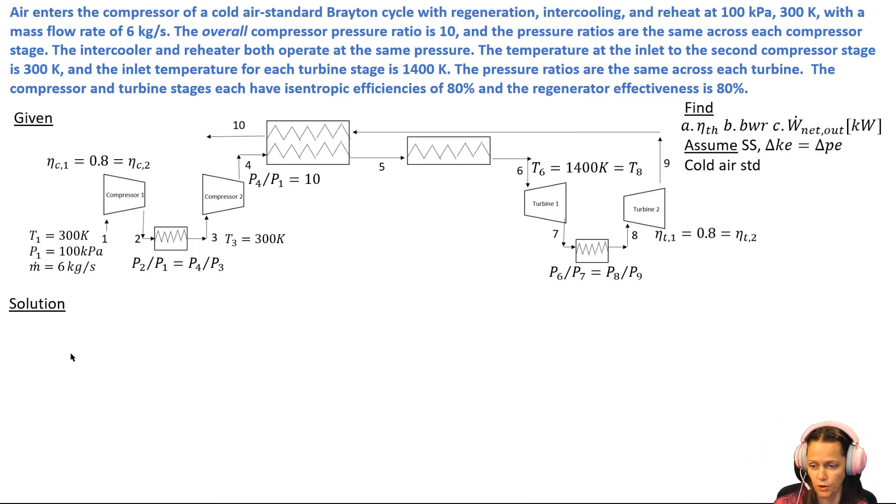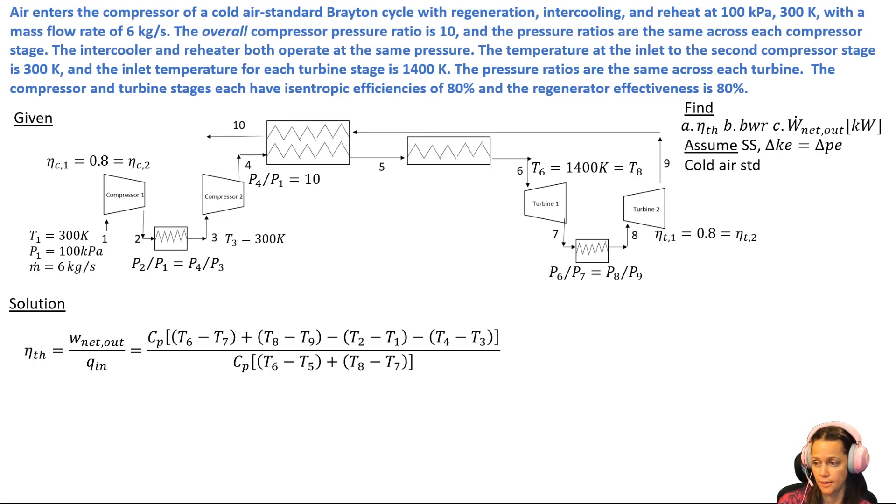I'm going to get some governing equations for that. My thermal efficiency is work net out over QIN. The work output for the turbines is between 6 and 7 and 8 and 9, so that comes from applying my first law and getting things in terms of delta H's, and then putting those delta H's in terms of CP delta T because it's a cold air standard Brayton cycle.